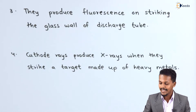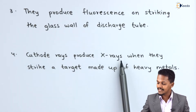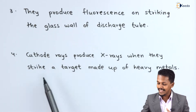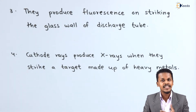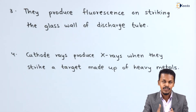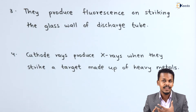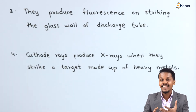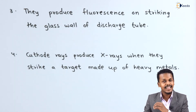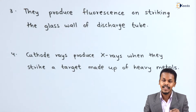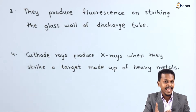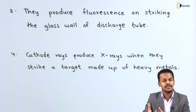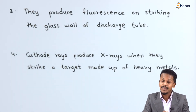Cathode rays produce X-rays when they strike a target made up of heavy metals. When a very high voltage is provided, the cathode rays — that is, the electrons — bombard the heavy metal particles, and that is how X-rays are produced from cathode rays.